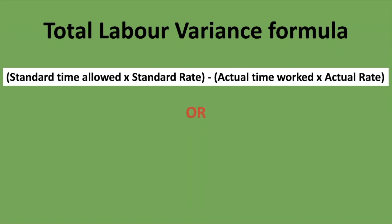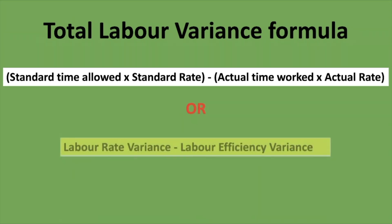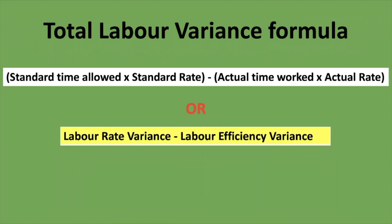Another way to calculate the total labor variance is by taking the labor rate variance and deducting the labor efficiency variance. If you have already calculated those two variances, you can use them to derive the total labor variance.